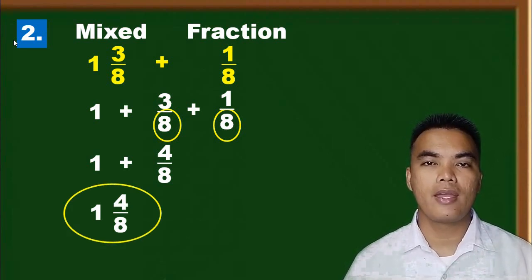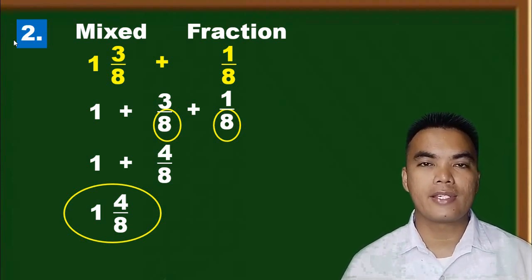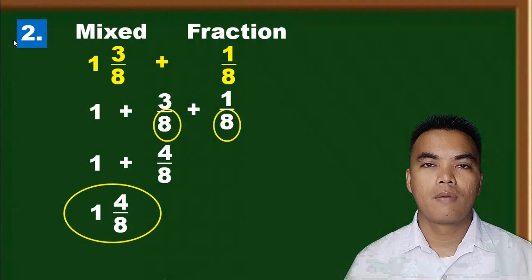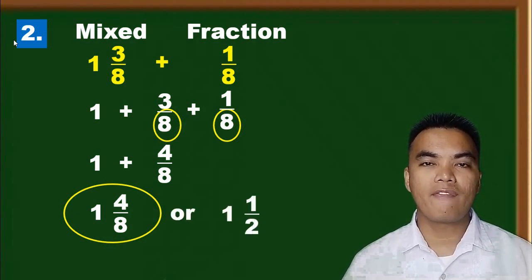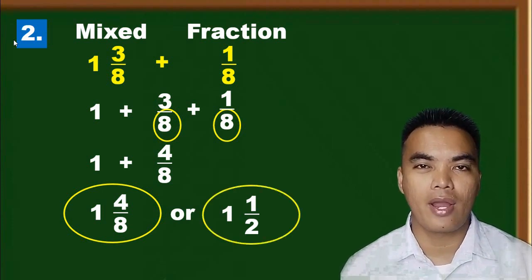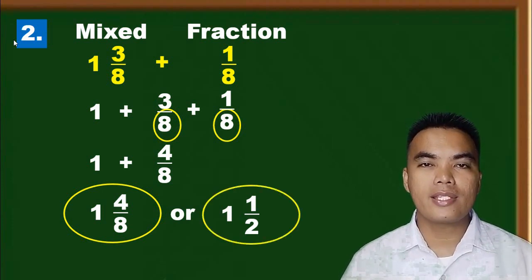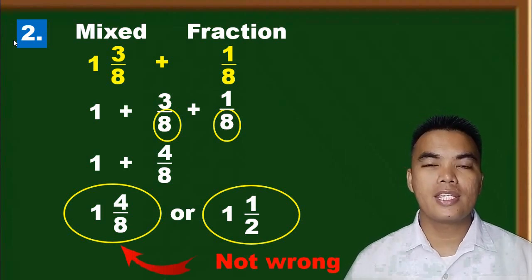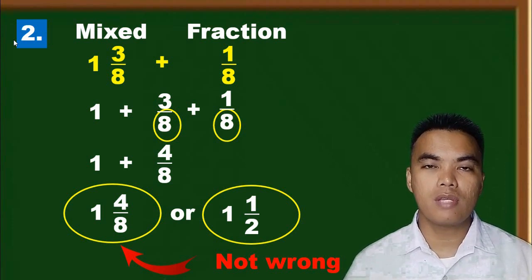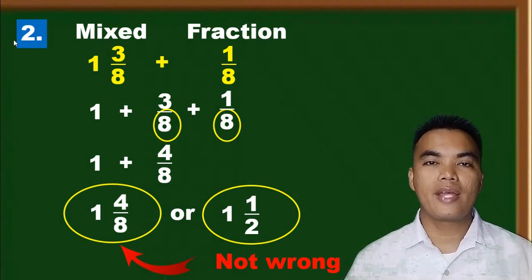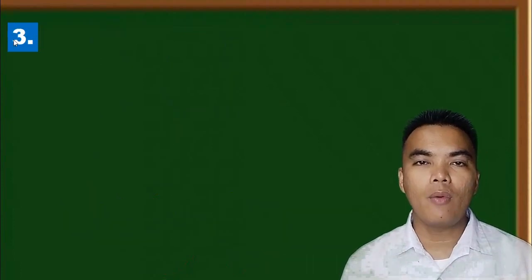If your teacher wants you to simplify, find the lowest term. In this case, both four and eight can be divided by four, so our final answer is one and one half. Note that one and four over eight is not wrong — you only simplify when required.